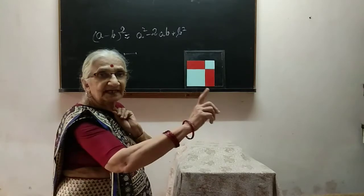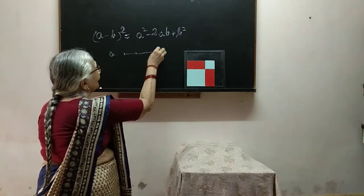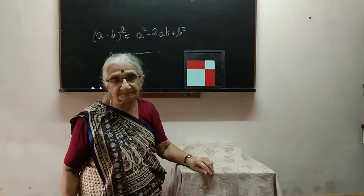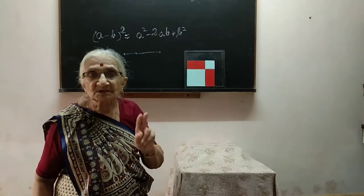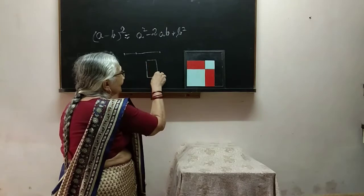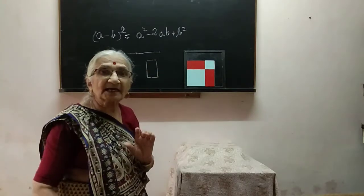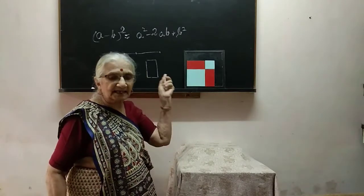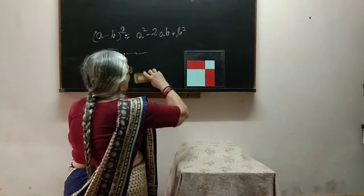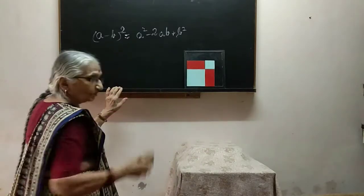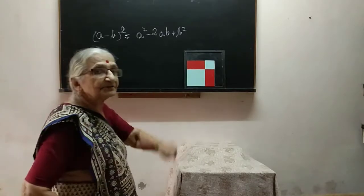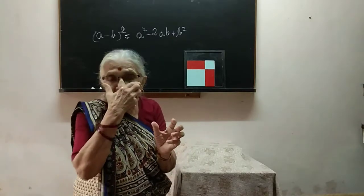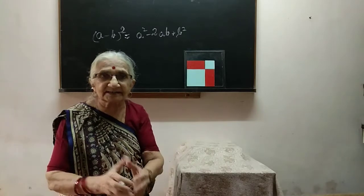B is represented by another line segment of a different length. If you were to add the two, you take them side by side — this is A and this is B — then the whole length is A plus B. For any product, we take a rectangle whose sides are A and B, and therefore the area will be AB. So the product AB is represented by a rectangle whose sides are A and B.